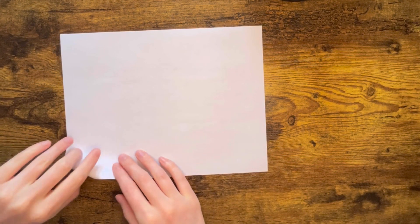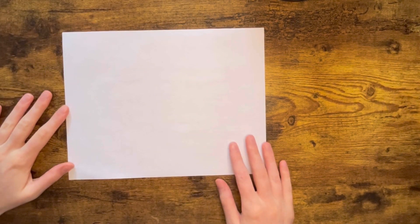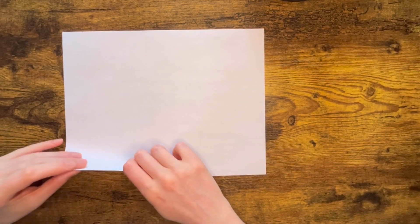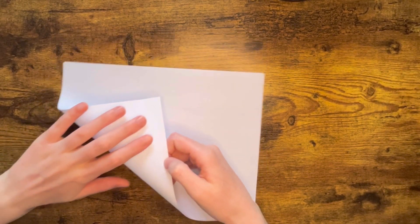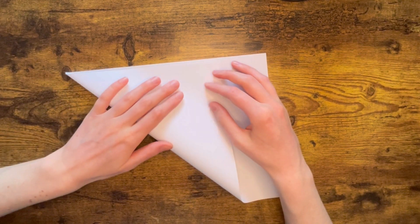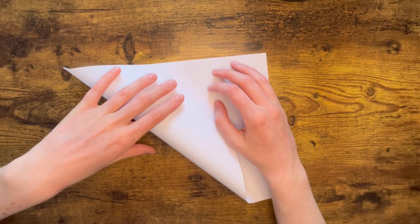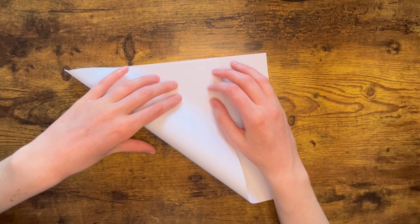All right so the first step is if you have an 8.5 by 11 sheet of paper you're going to fold it into squares. You could start with square paper but that's not something most people have around the house. And also I find that the 8.5 by 11 paper has a really nice weight to it whereas some origami paper is a little bit too thin.